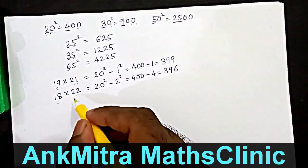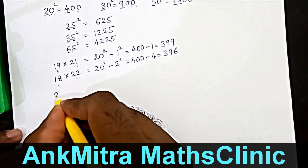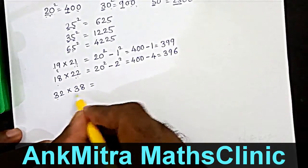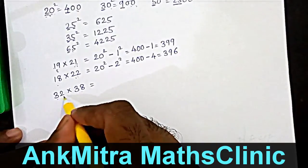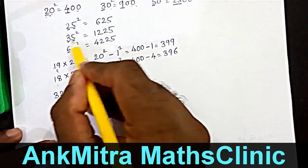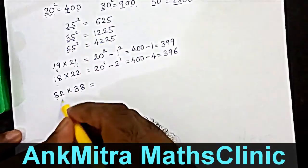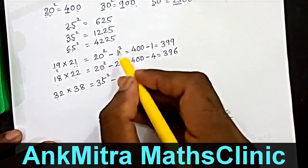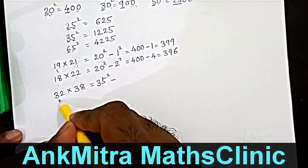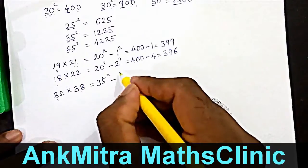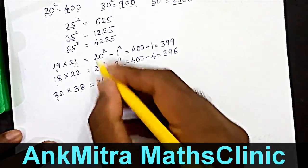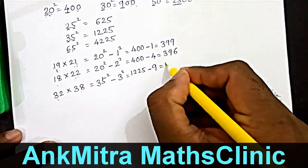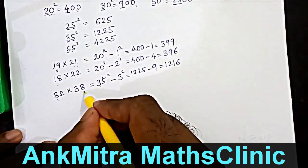Now let's go to some larger numbers. Let's say 32 multiplied by 38. These two numbers are six apart, so the middle number will be 35. We already know how to calculate 35 squared quickly. So we will start with 35 squared, then subtract the square of the difference between 35 and 32, which is three. Three squared is nine. 35 squared is 1225. Subtracting nine, we get 1216, which is the product of 32 and 38.